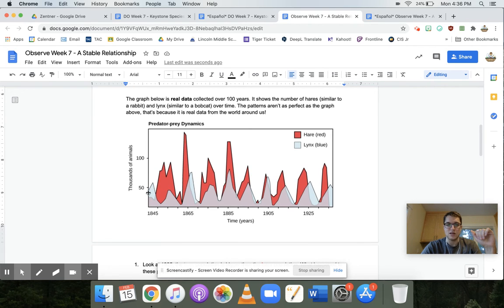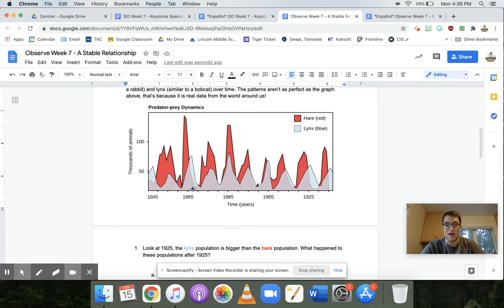So we can look at this, and notice that parts of it where the blue is not, the blue is the lynx. So where there's blue but no red, that's where the lynx is actually a bigger population than the amount of hares. There's more lynx in that time. It happened a few times.